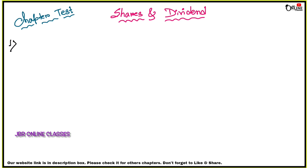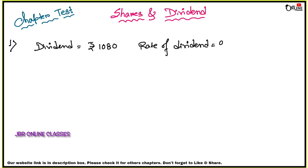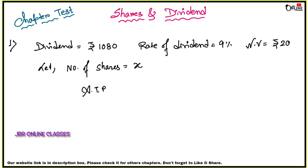Number one: if a man received rupees 1080 as dividend from 9% rupees 20 shares, write down dividend equal to rupees 1080. Rate of dividend equals 9%, and nominal value equals rupees 20. Find the number of shares purchased by him. Let the number of shares equal to x.